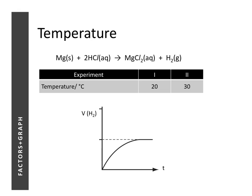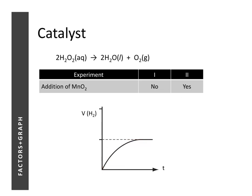Next we look at the effect of temperature. In the same reaction, the temperature is increased for experiment two. The initial rate will change — a steeper initial gradient is drawn. The volume of hydrogen gas will not change, because temperature does not affect the amount of product produced. So once again, same volume and faster speed means the reaction will end earlier than the curve for experiment one.